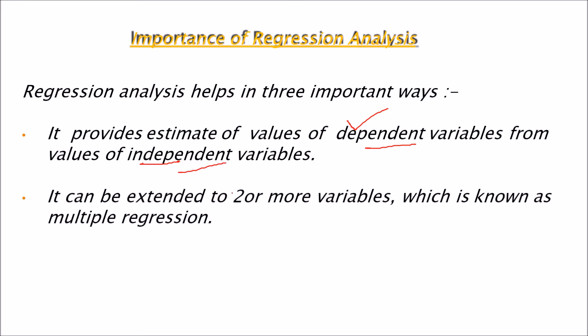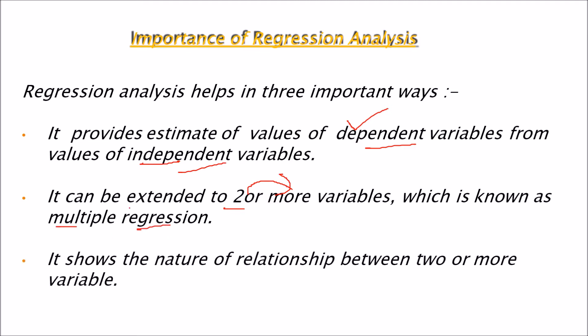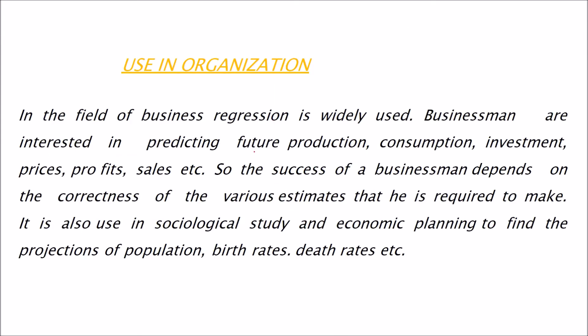Then it is not just limited to two variables. It can be extended to more than two variables which we call multiple regression. Then as we just indicated, the nature of relationship between two or more variables - what the nature is, if this goes straight, the other value is also going straight or it is going this way or that way or opposite way. We will see about these by taking certain examples.